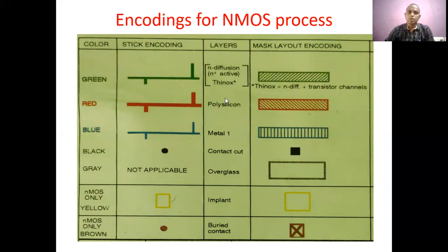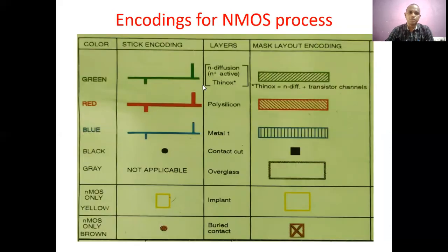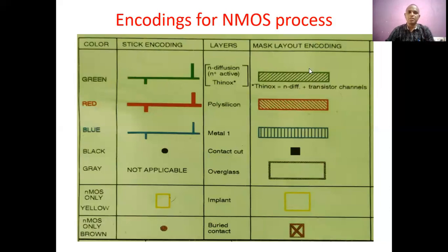We have three main layers: N-diffusion, polysilicon, and metal. N-diffusion has been seen in both stick diagram and layout representation. This color coding is very important because using this we are going to draw all digital circuits — NAND, NOR, any digital circuit — in stick diagram and layout form. Without knowing this color representation we cannot do stick diagram or layout drawing.